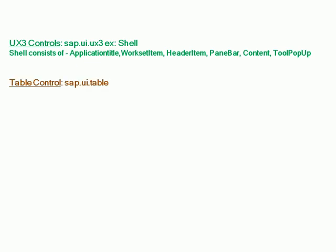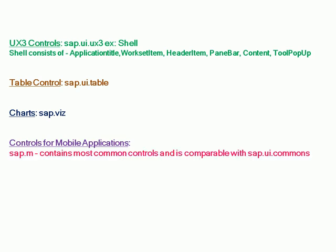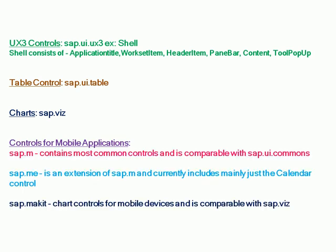Table control uses sap.ui.table. For charts, sap.viz is used. For mobile applications, sap.m contains the most common controls and is comparable with sap.ui.commons. sap.me is an extension of sap.m and currently includes mainly the calendar control. sap.makit provides chart controls for mobile devices and is comparable with sap.viz.